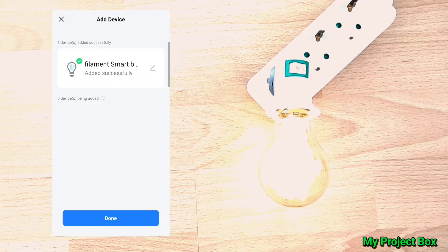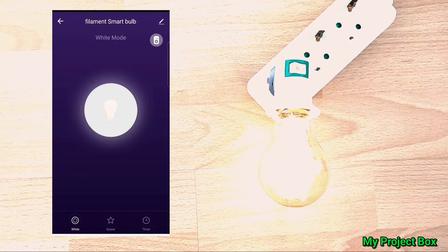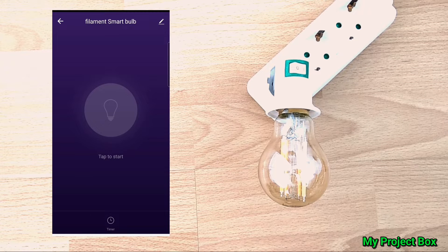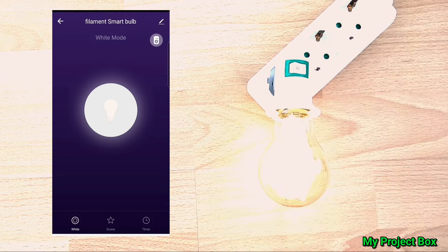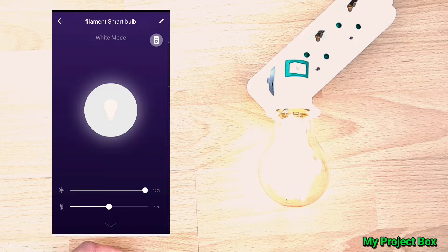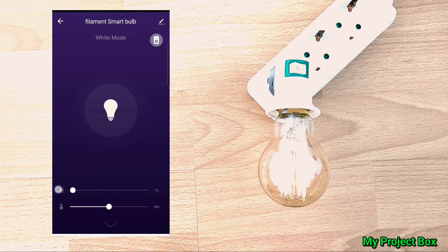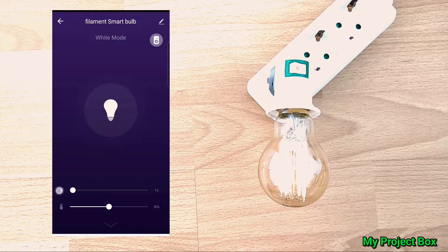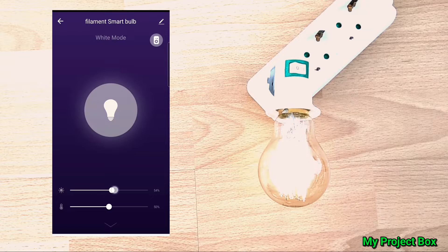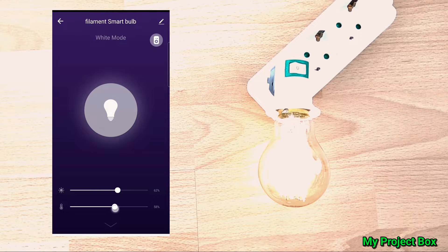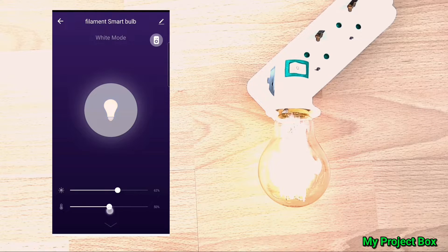And now we should have full Wi-Fi control. On and off. And we can control the color tone as well and the brightness. So we can dim it down, we can give it full brightness, or we can even give it the color tone more cold white or warm white or somewhere in between.